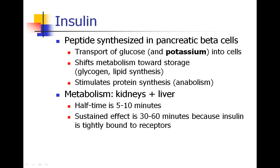We're going to start with diabetes and talk for just a few minutes about insulin. Insulin is a peptide that is made in your pancreas. Your pancreas has beta cells, which generate insulin. The purpose of insulin is to allow glucose to be transported into cells. As this happens, potassium is also transported into cells, and sometimes insulin is used to temporarily decrease serum potassium levels in cases of hyperkalemia.